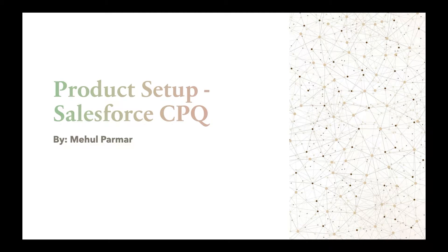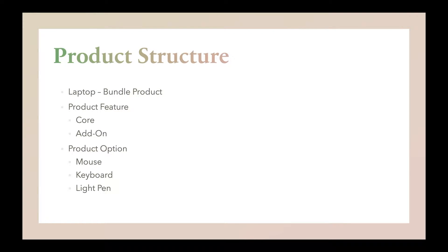Hello everyone, welcome to my channel. Nowadays we have made a habit of shopping online — we purchase different products online. But do you know how these products are being set up? Today we are going to learn how a bundle structure can be set up using Salesforce CPQ. According to this structure, there will be a product called Laptop, which will be a bundle product, with two features: Core and Add-on.